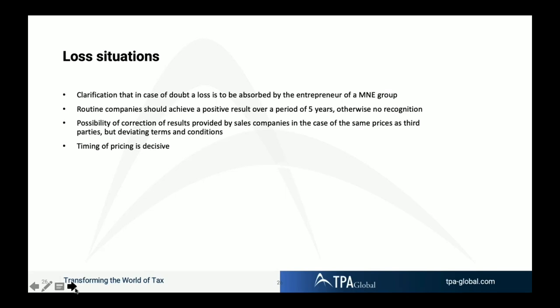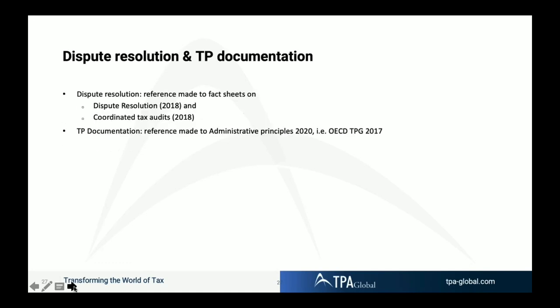There is another challenging element: the tax inspector can adjust the profits of a sales entity even in the case of the same price with a third party if the terms and conditions deviate — so the price may be the same but the conditions are different, which opens the door for the tax inspector to challenge and adjust the transaction. On timing: the timing of pricing is again decisive — you need to go back to the point in time when the transaction was concluded between related parties. Dispute resolution and documentation are fully aligned with the OECD guidelines.